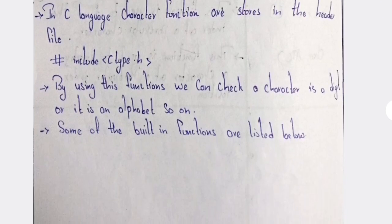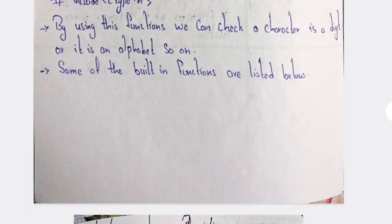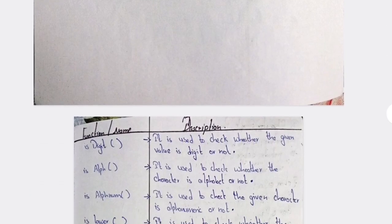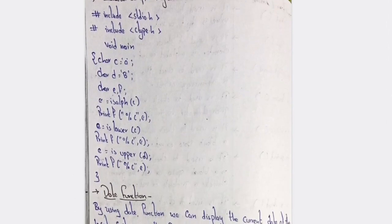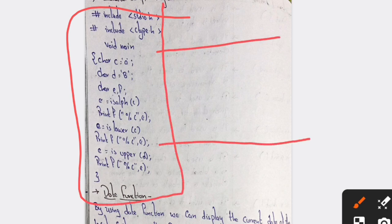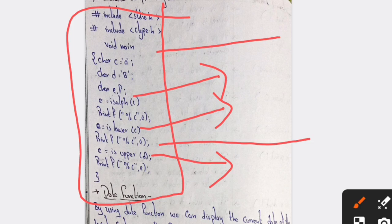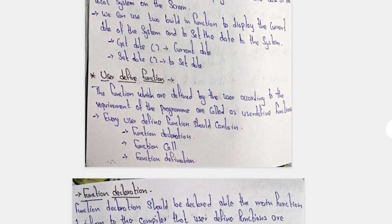Next, the character type of function — what this character type function will do is give some characters like a, b, c, d, and so on. This is the sample program for character functions. The structure is the same up to a point — only three things are changing: these three lines are different, and the remaining program is all the same.